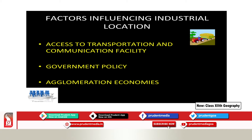Then we have something called agglomeration economy. Agglomeration economy is a cluster of industries — one major industry comes at one point, and around it other industries flourish. Minor industries are benefited by the major industry, or the major industry is benefited by other minor industries. That is the cluster of economies, and it is called agglomeration economies.